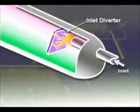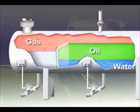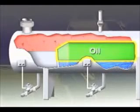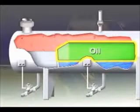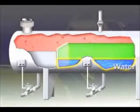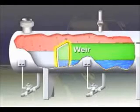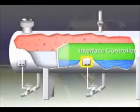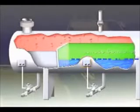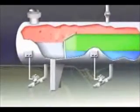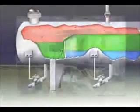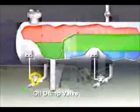The liquid collection section of the vessel must provide sufficient time for the oil and emulsion to form a layer or pad above the free water. A weir maintains the oil level, while an interface controller maintains the water level. The oil spills over the top of the weir, and a level controller which operates the oil dump valve then controls its level.